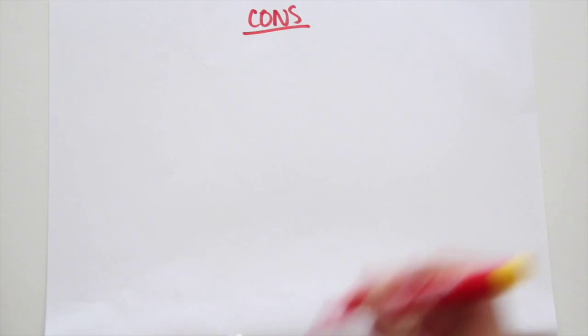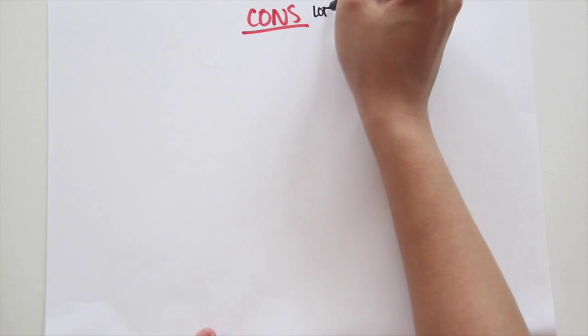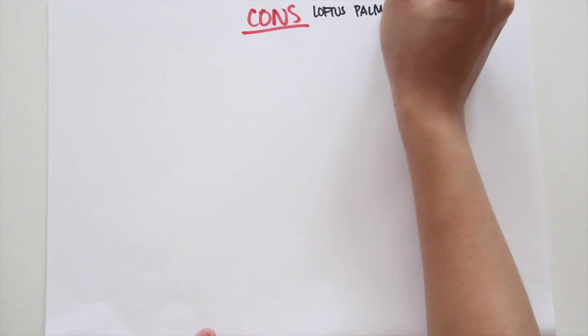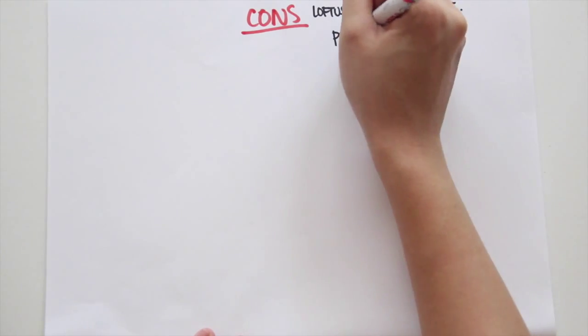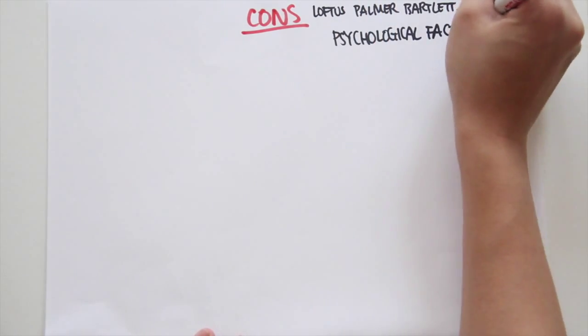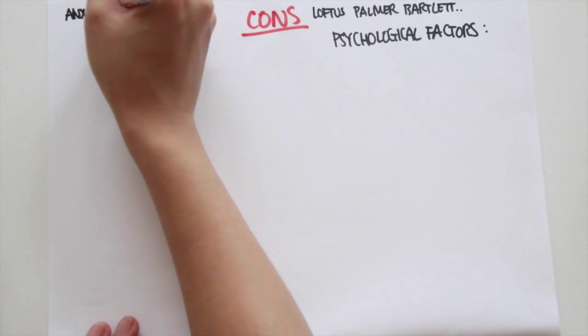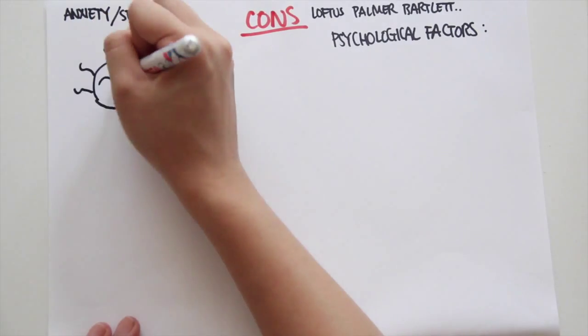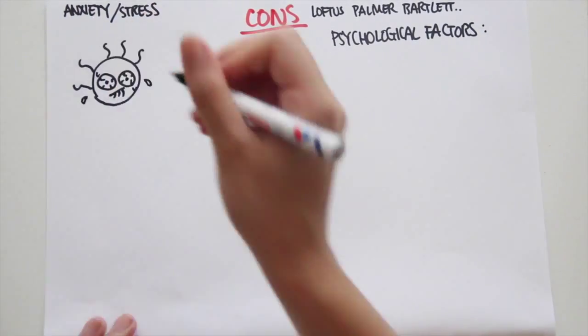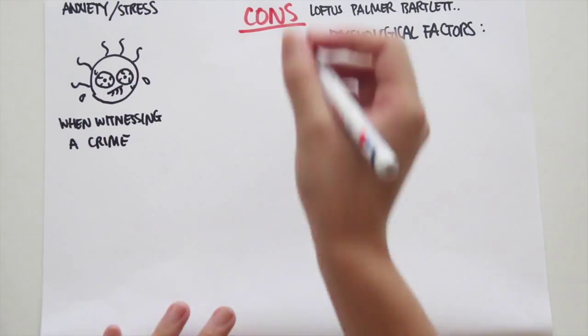However, there are multiple limitations to eyewitness testimonies. Research by Loftus and Palmer, Bartlett and other renowned psychologists have found that eyewitness testimonies are affected by psychological factors such as anxiety and stress. Both of these usually occur when witnessing a crime.